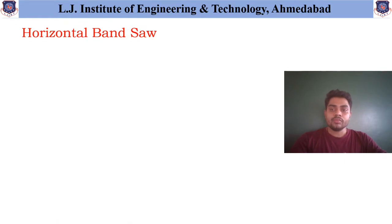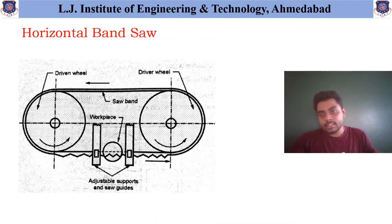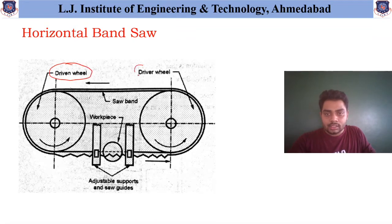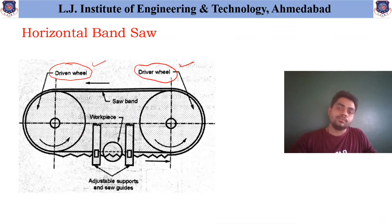Now we will discuss about the horizontal band saw. As you can see in the case of this horizontal band saw, two wheels are available: the first one is the driven wheel, another one is the driver wheel. The motor is connected to this driver wheel, which automatically helps to rotate this driven wheel.